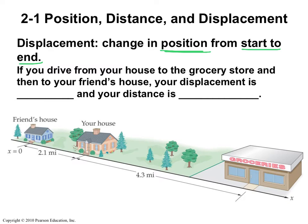So if we drive from my house to the grocery store, and I'm going to put a little start here so that we remember where we started, and then we go all the way back to our friend's house, so we end here. Our displacement is the total distance between the start and the finish. So our displacement is only 2.1 miles.